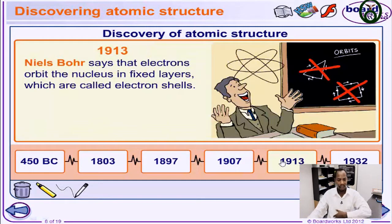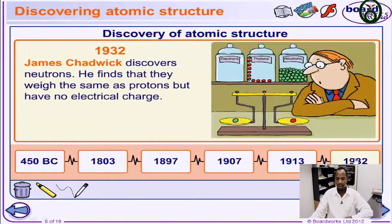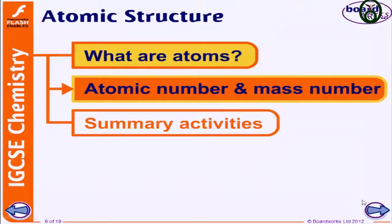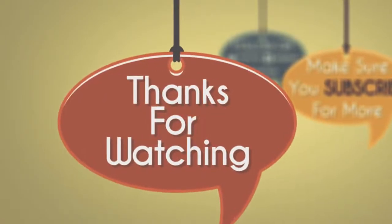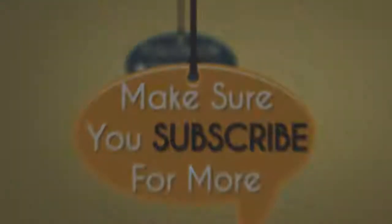In 1913, Bohr said that the electrons orbit the nucleus in a fixed layer, and he called them the electron shell — that was Bohr's contribution. In 1932, James Chadwick discovered the neutrons. He found that they weigh the same as protons and have no electrical charge. These were the earliest contributions to the development of atomic structure. Thank you very much for watching today's video.